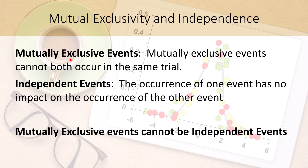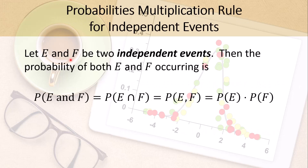If you have two events that are independent, then we have a very straightforward multiplication rule. If E and F are two independent events, the probability of E and F — that is, the probability of their intersection, also known as the joint probability — is nothing more than the product of the two individual probabilities: P(E and F) = P(E) × P(F).